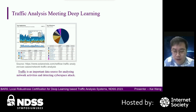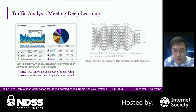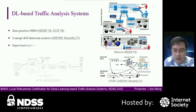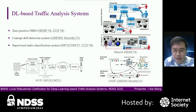Network traffic is one of the most important data sources for analyzing network activities and detecting cyberspace attacks. In recent years, deep learning has been widely applied for data analysis. Therefore, deep learning can be used for improving traffic analysis systems. There are three typical deep learning-based traffic analysis systems, including zero-positive NIDS, concept drift detection system, and supervised multi-classification system.